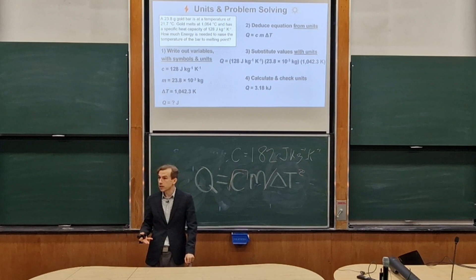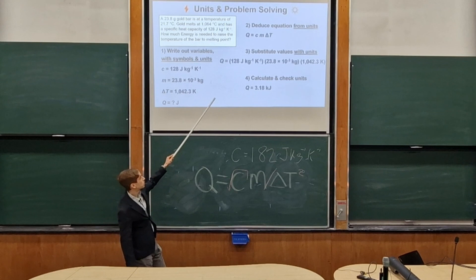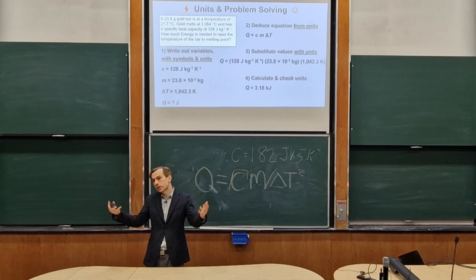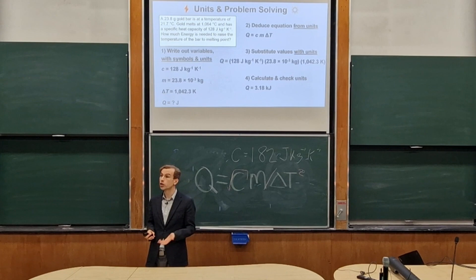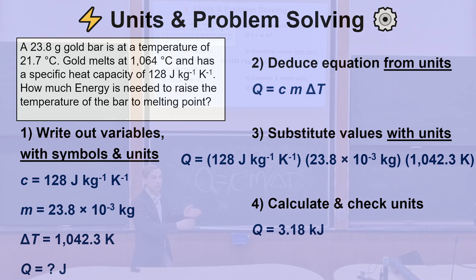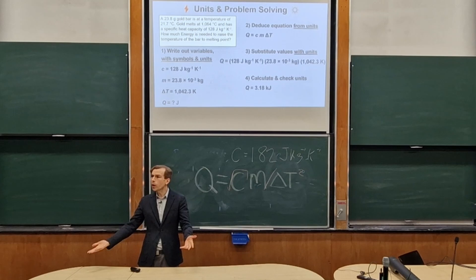Even if we can't remember the equation, by writing everything down with symbols and units, thinking about what the equation has to be, and keeping the units throughout, we can be very confident we have the right answer. Worst case, maybe we've missed a factor of π or 2 — but if you can do this in an exam, that's a really fantastic ability. I'd much rather someone could do that than just memorize equations from the back of the textbook.